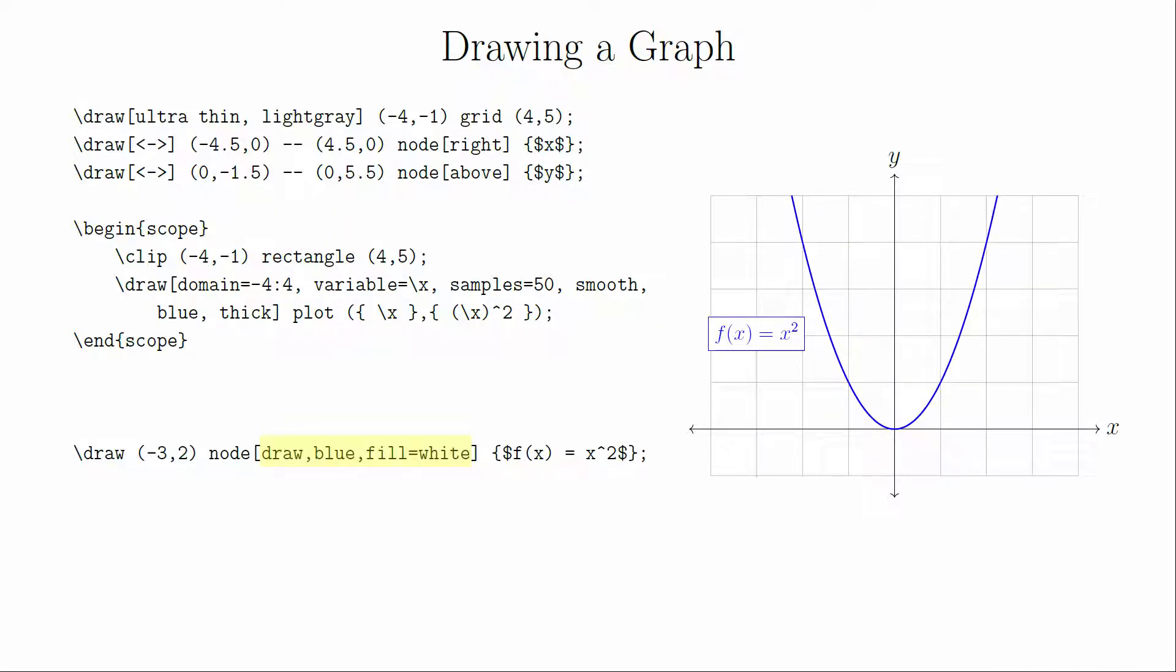Let's label the graph. We'll put the label off to the left side. In order to make it stand out, we'll draw the border and make the text blue, and we'll fill the background white so that the coordinate grid doesn't show through.